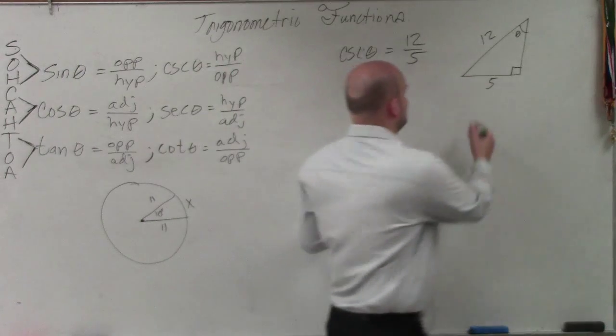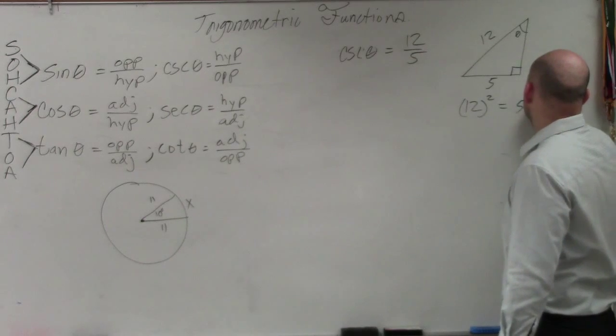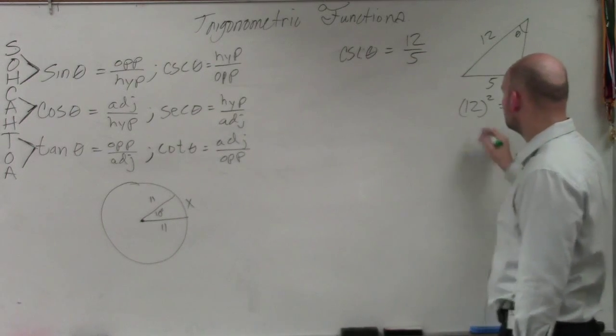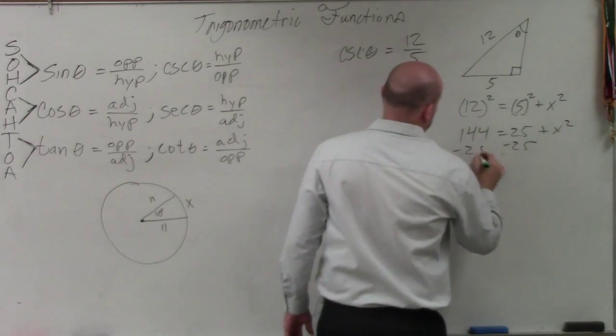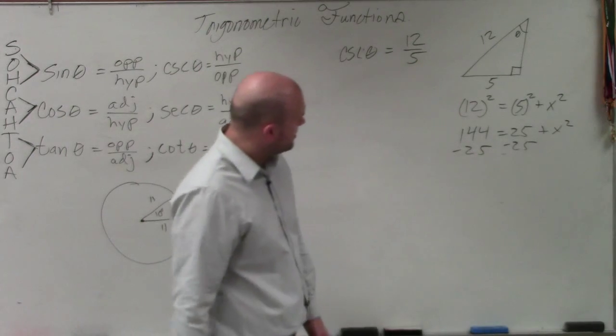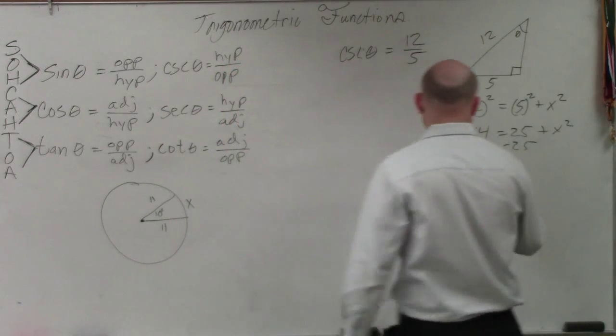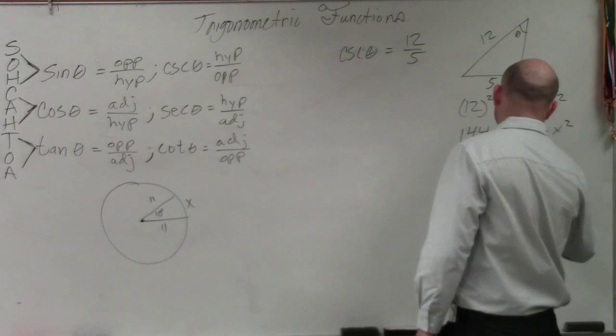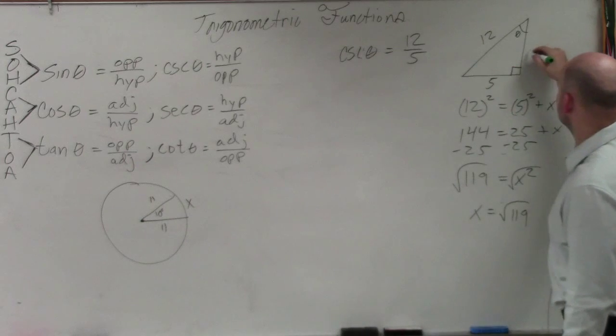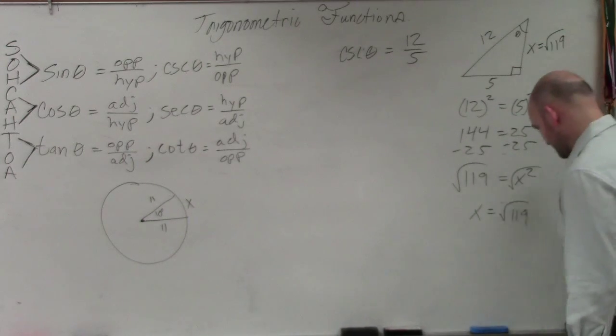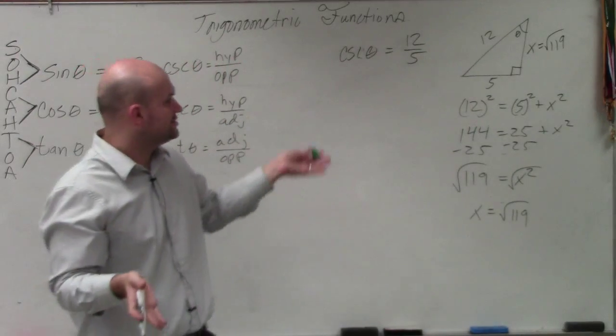To identify my adjacent side, I have to go back and use Pythagorean theorem. So that becomes 119. So x equals the square root of 119. Is everybody following me with that? Does everybody see how I went from an equation to using that triangle?